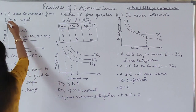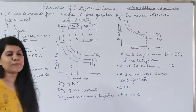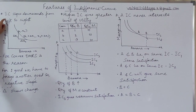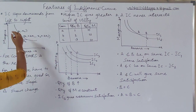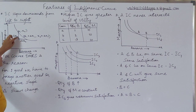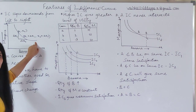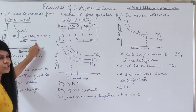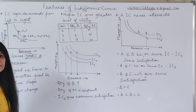In indifference curve, the first three features which you need for your syllabus — I am explaining them now. The first feature says the IC slopes downwards from left to right. According to the slide, you have an x-axis and a y-axis. On the x-axis you have banana and on the y-axis you have mango, and the curve shape you can see is a negative slope. At the same time, the shape of the curve is called convex to the origin. Why is it convex to the origin? The simple reason for that is diminishing marginal rate of substitution.